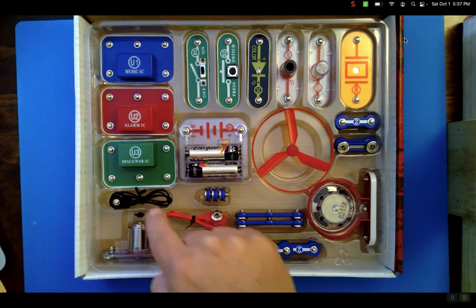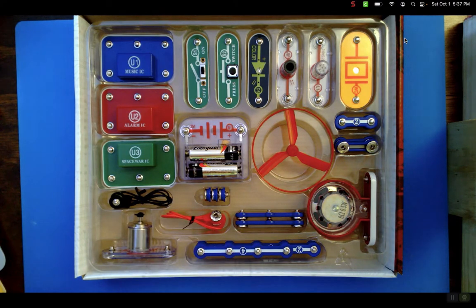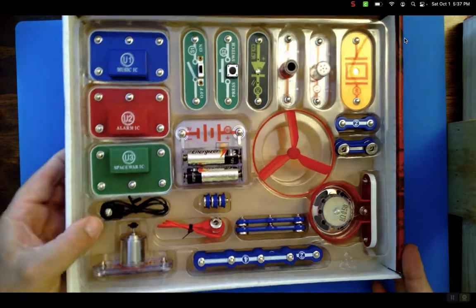Then we've got their snap wires: fives, fours, some threes, some twos, some ones, and then some jumper wires. I think I got them all, so there's the parts.